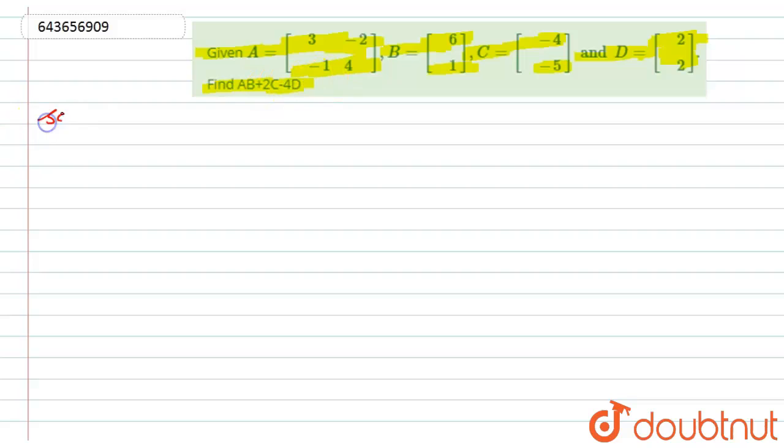We have to find AB + 2C - 4D. So let us start with the solution. Here we have given four matrices and we have to find this expression, that is AB + 2C - 4D.